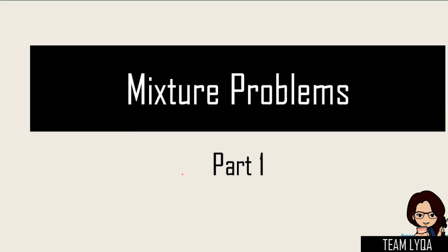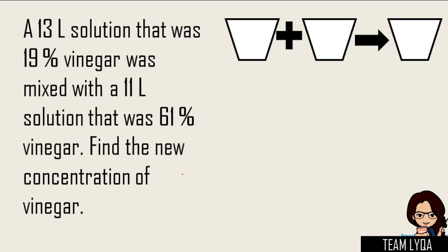Okay, so this is part one of mixture problems. If you have your workbook, you can follow along. This is the first question. Sabi, a 13-liter solution that was 19% vinegar was mixed with an 11-liter solution that was 61% vinegar. Find the new concentration of the vinegar. Now, itong mga buckets na ito sa gilid, yan yung clue ninyo in order for you to solve the problem.